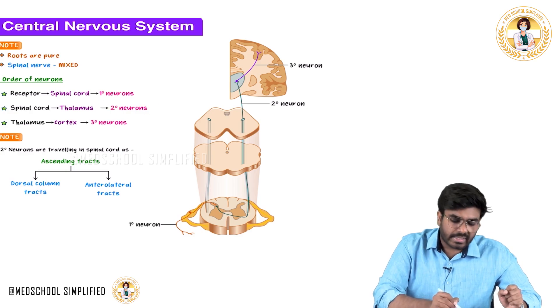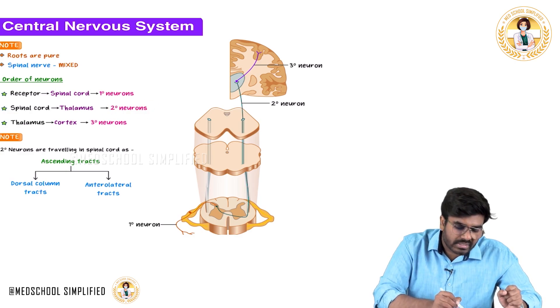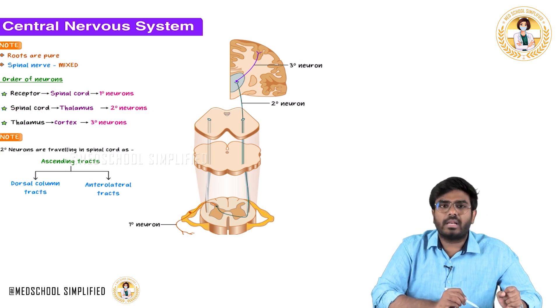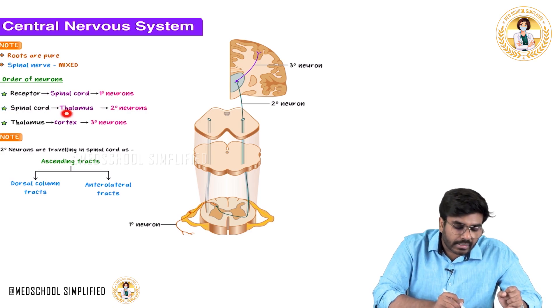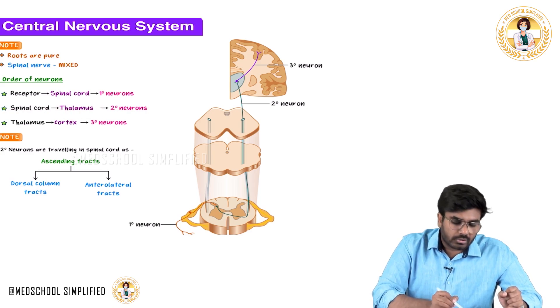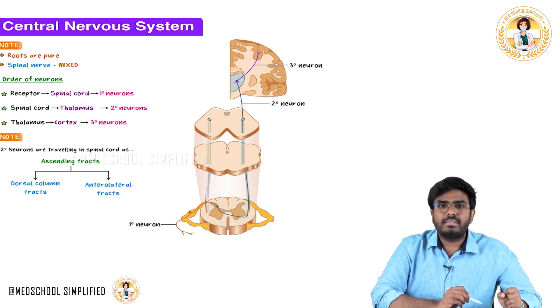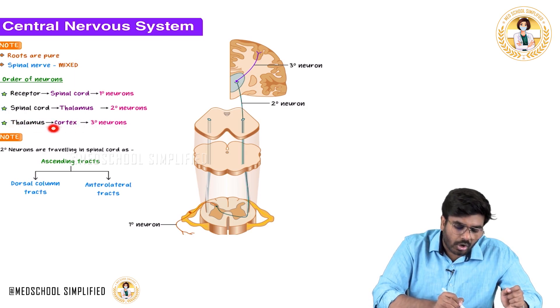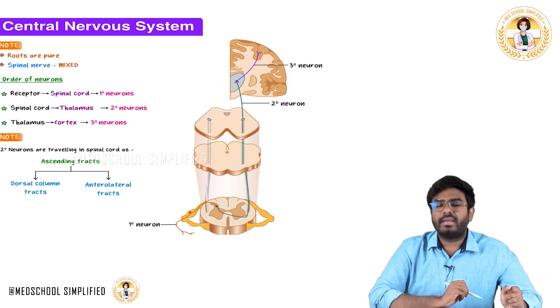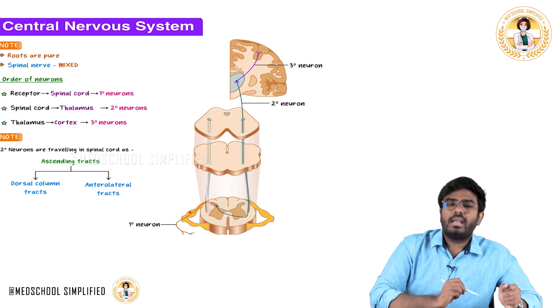The second-order neurons start within the spinal cord and end in the thalamus. The third-order neurons start from the thalamus and end in the cortex.